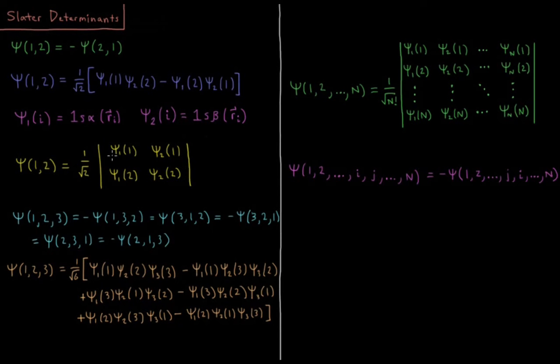We can say psi 1, 2 equals 1 over the square root of 2 of the determinant of this matrix. So each row of this matrix is a different electron, and each column is a different orbital. So for a 2x2 determinant, the result is top left times bottom right minus top right times bottom left. That gives this expression here once you distribute everything through.